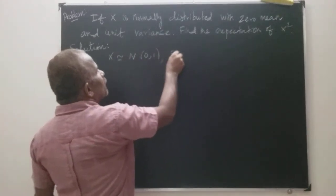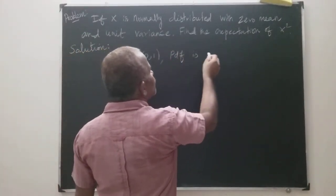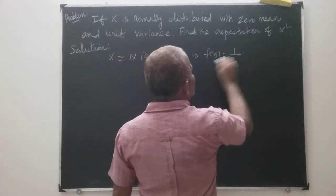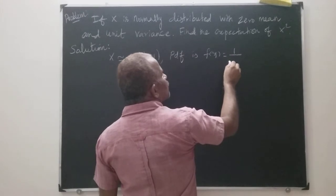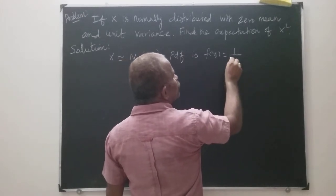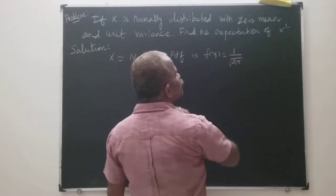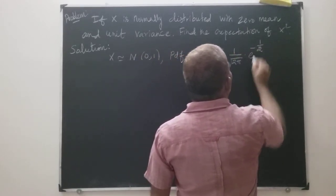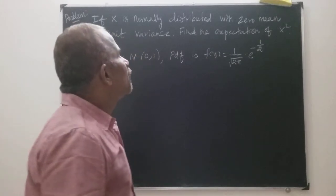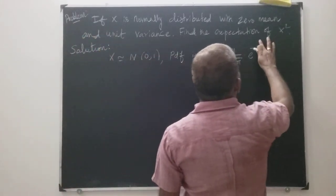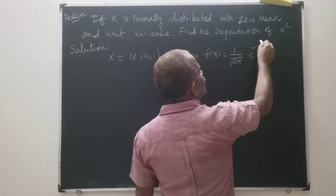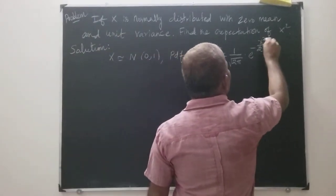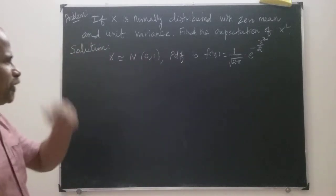The probability density function is f of x. f(x) is equal to 1 by sigma — sigma is equal to 1 — therefore, 1 over square root of 2π, into e to the power minus 1 by 2 times x squared by 2. Here mu is 0, sigma is 1. This is the PDF.